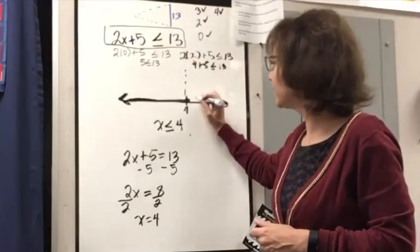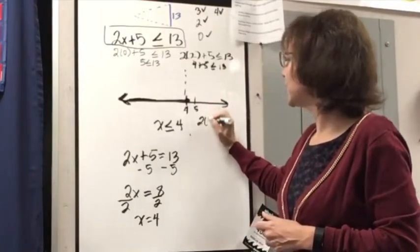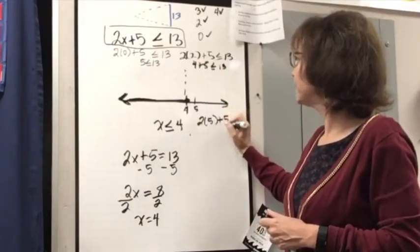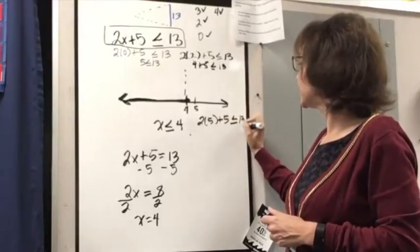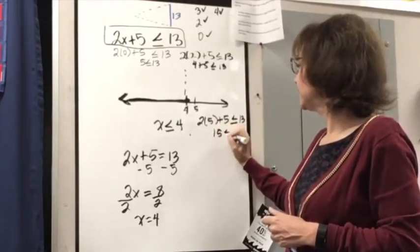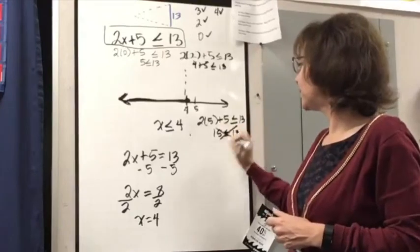So in this case, when I tested 5 over here, I found that that was false. Because 2 times 5 plus 5 is not less than or equal to 13. Because I have 15 less than or equal to 13, and that is false.